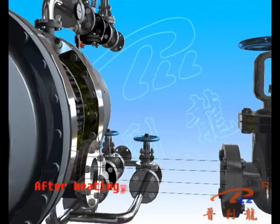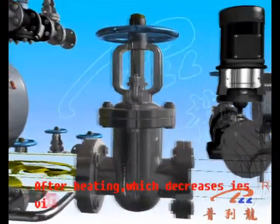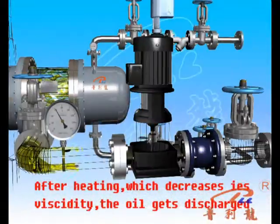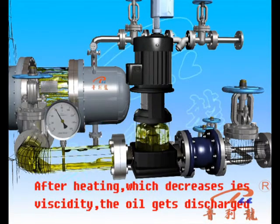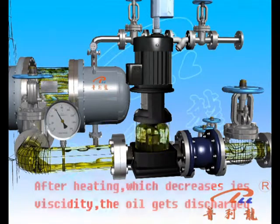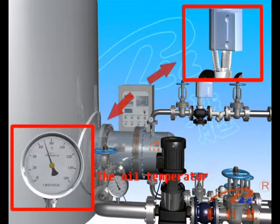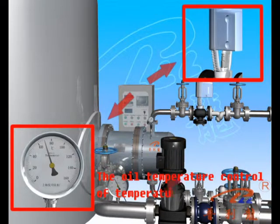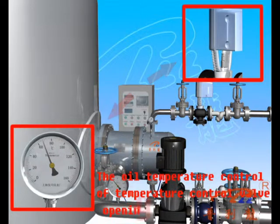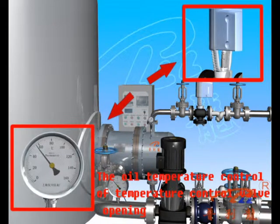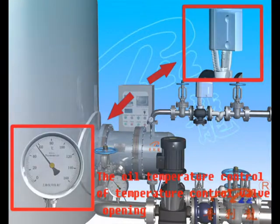The temperature of the oil increases through heating, which decreases its viscosity. The oil transfer pump discharges the oil from the oil tank. A temperature control valve is fixed at the steam outlet of the heat exchanger to control the steam outlet volume by using the oil outlet temperature measured by the heat detector at the oil outlet. In this way, the temperature control valve can ensure a constant oil temperature.